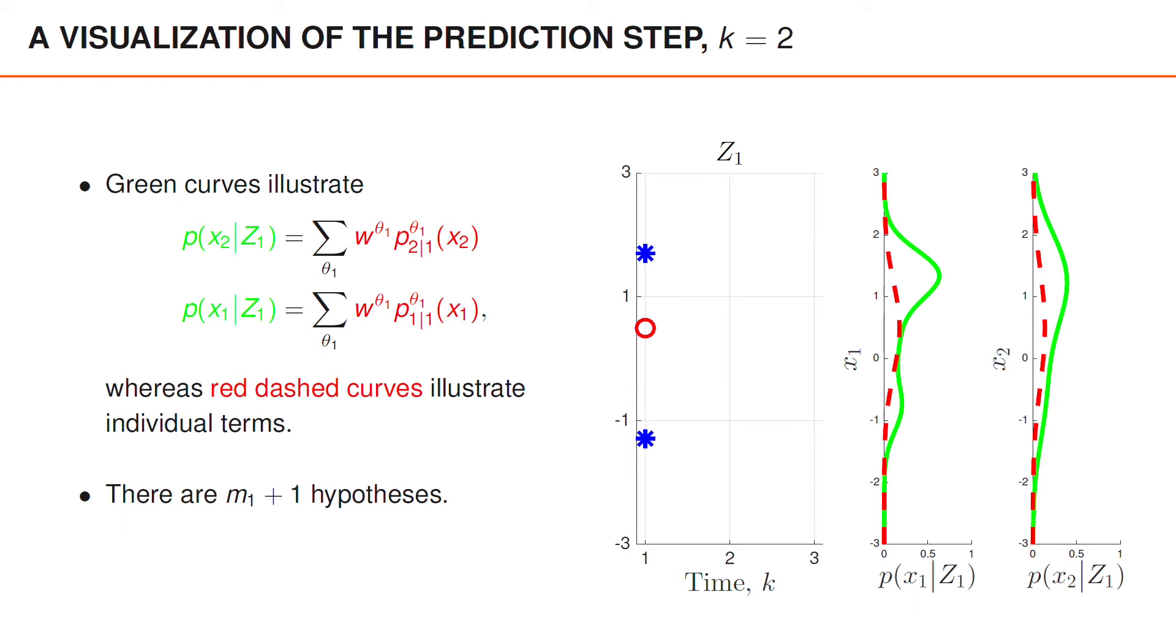For the undetected hypothesis, the weight times the posterior at time 1 is this red dashed curve. After the prediction, the density has a larger covariance which yields a flatter red dashed curve. Similarly, for the other two hypotheses, the covariance has also increased.